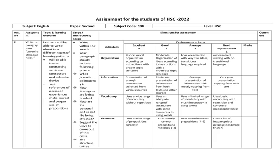Because we are all worried about this matter. First of all, you have to concentrate on the topic and learning outcomes. Learners will be able to write about two different types of learning patterns. First, they will be able to use contrasting sentence connectors and cohesive devices.